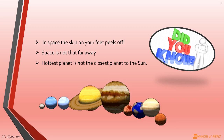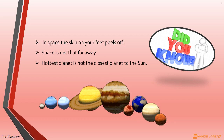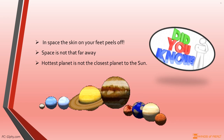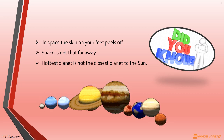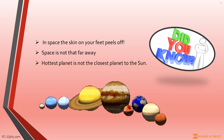The hottest planet is not the closest planet to the Sun. Even though Mercury is the closest planet to the Sun, it is not actually the hottest. Mercury does not have any atmosphere, meaning the planet is only hot in the daytime when directly facing the Sun — temperatures can rise to 425 degrees Celsius, but at night can drop to minus 180 degrees Celsius. Venus is the hottest planet; its thick clouds trap the Sun's heat, causing Venus to be a sizzling 500 degrees Celsius all of the time.